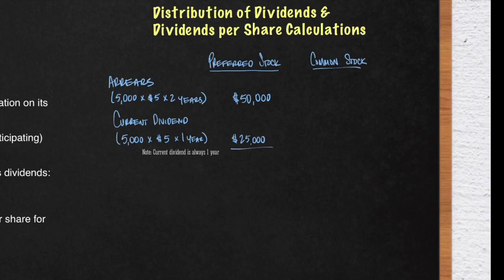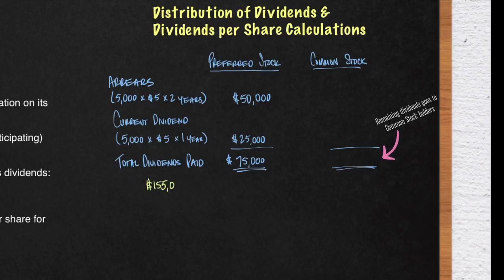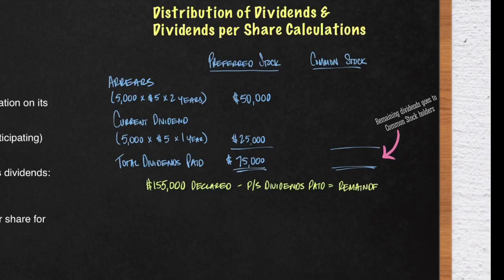You want to total the dividends paid out to the preferred stock. Total dividends paid to the preferred stock will be $75,000. Now the preferred stock is all paid out in respect to dividends. The remainder goes to common stock. The board of directors declared $155,000 worth of dividends. Subtract what was paid to the preferred stock shareholders, and the remainder is for the common stock: $155,000 minus $75,000 equals $80,000 to common stock shareholders.